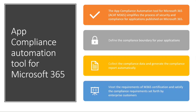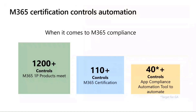That way we can get you compliant faster, and we can also enable your enterprise customers to see the certification status and all the compliance controls you have satisfied. Our first-party products today satisfy about 1,200 controls. When we created this app compliance program three years ago, we identified a set of 110 controls that most enterprise customers ask any app developer to meet. This tool automates about 35 to 40 of those controls today, and our goal is to automate about 40 controls by early next year.